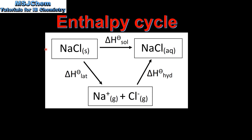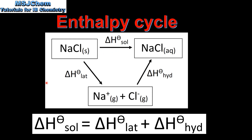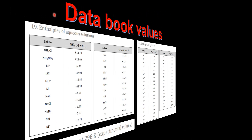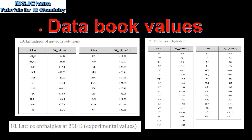Here we have an enthalpy cycle. We can use the enthalpy cycle to calculate the enthalpy change of solution of an ionic compound. From the enthalpy cycle we can see that the enthalpy change of solution is equal to the lattice enthalpy plus the enthalpy change of hydration. The data book values that you need can be found in table 19 (enthalpies of aqueous solutions), table 20 (enthalpies of hydration), and table 18 (lattice enthalpies).